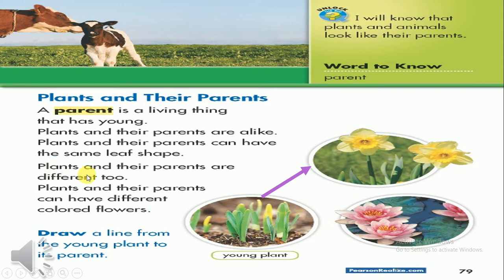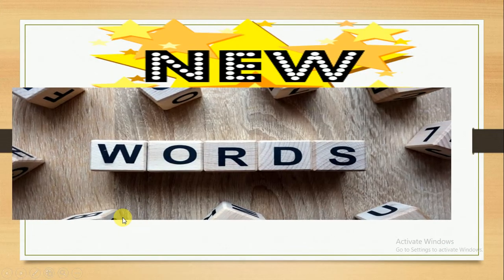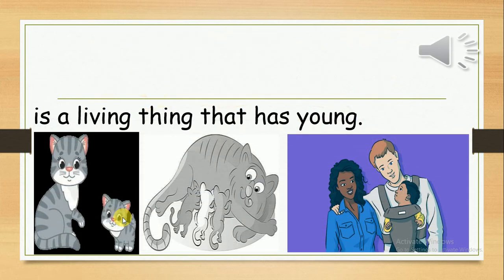Plants and their parents are different too. How? Plants and their parents can have different colored flowers. Let's look at our notes together. What is a living thing that has young? Like this in the picture — mother and father.